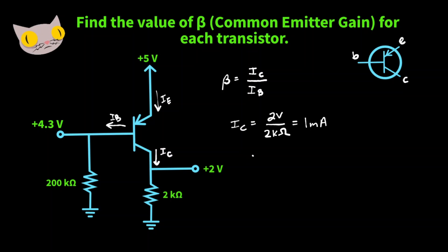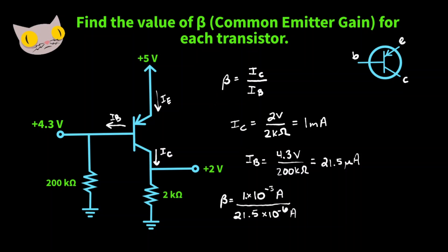Now for the base current, that's going to be 4.3 volts over 200k ohms, and that's going to give us a value of 21.5 microamps — that's 21.5 times 10 to the negative 6 amps. So we have I_C and I_B. Now we can find the common emitter gain. Beta is equal to 1 times 10 to the negative 3 amps over 21.5 times 10 to the negative 6 amps, giving us about 47. Our common emitter gain for this transistor circuit is 47.